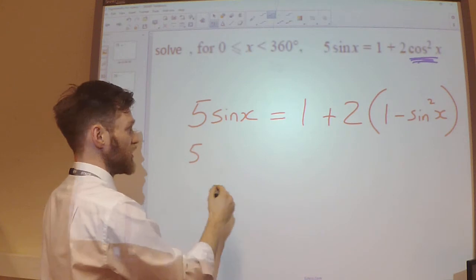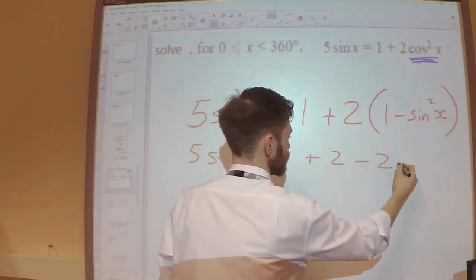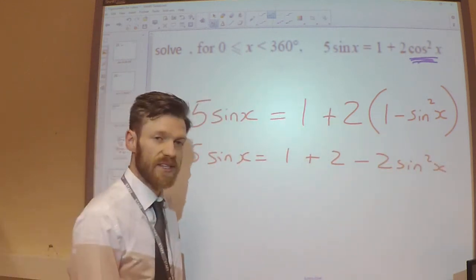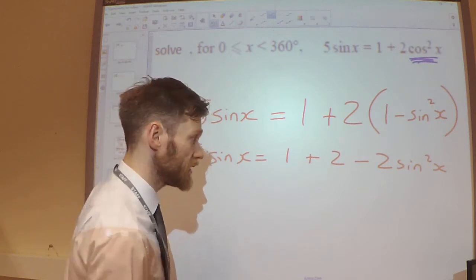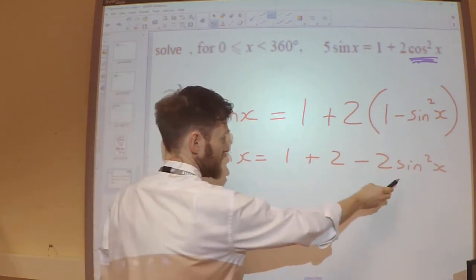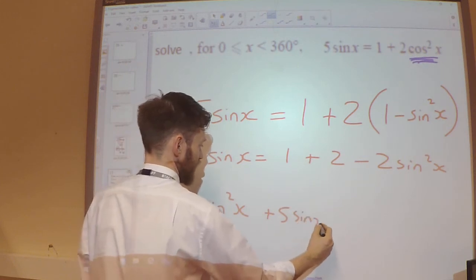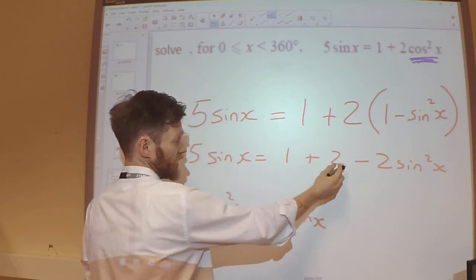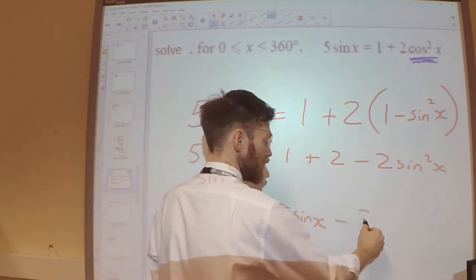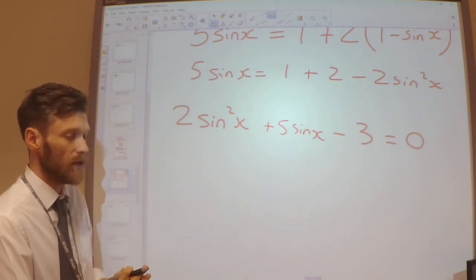Let's expand those brackets out now. And now I want to collect up like terms and put everything on one side. So moving the 2 sin squared over to the left-hand side, I've got the plus 5 sin x. The 1 plus the 2 is 3. Moving that 3 to the left-hand side will be minus.